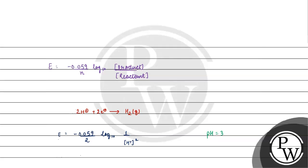pH has given us in question 3. Now, if we have minus log base 10, concentration of H plus equals 3. What is the concentration of H plus? 10 to the power minus 3 molar. E equals minus 0.059 by 2 log base 10, 1 upon 10 to the power minus 3 squared.